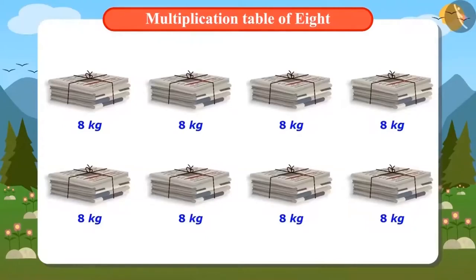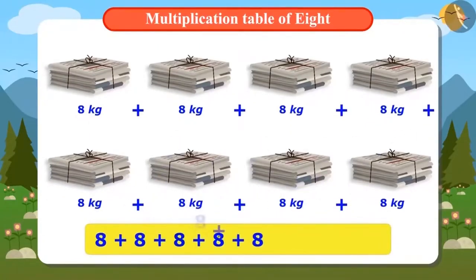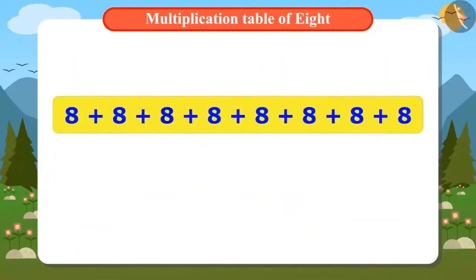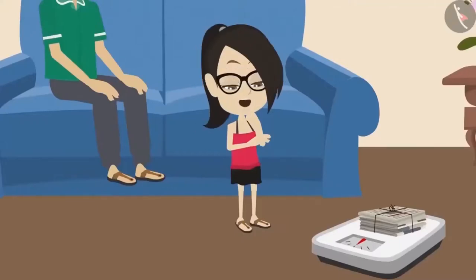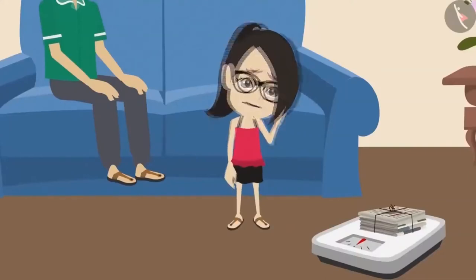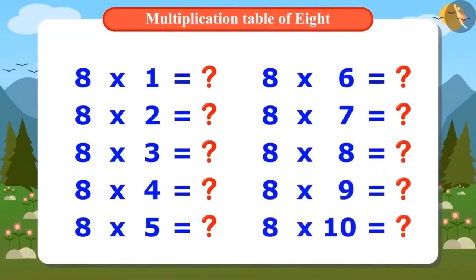To find out how many kilograms of newspaper there are, we add the weight of all the newspapers, that is, let's add 8 times 8. Adding 8 eight times will give us the same answer as multiplying 8 by 8. But to solve this, I should know the multiplication table of 8. Vandana doesn't know the multiplication table of 8, but she knows an easy trick to find it. I can find the table of 8 with the help of multiplication tables of 3 and 5.